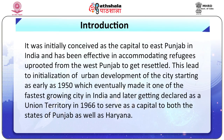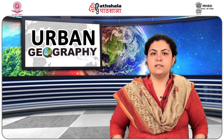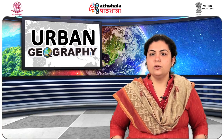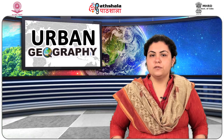It was initially conceived as the capital of East Punjab in India and has been effective in accommodating refugees uprooted from West Punjab. This led to the initialization of urban development of the city starting as early as 1950, eventually making it one of the fastest growing cities in India, and later getting declared as a union territory in 1966 to serve as a capital to both the states of Punjab and Haryana. The city serves as a regional and political center for its adjoining states, being one of the greenest cities in India with a unique planning concept known as the City Beautiful Movement.